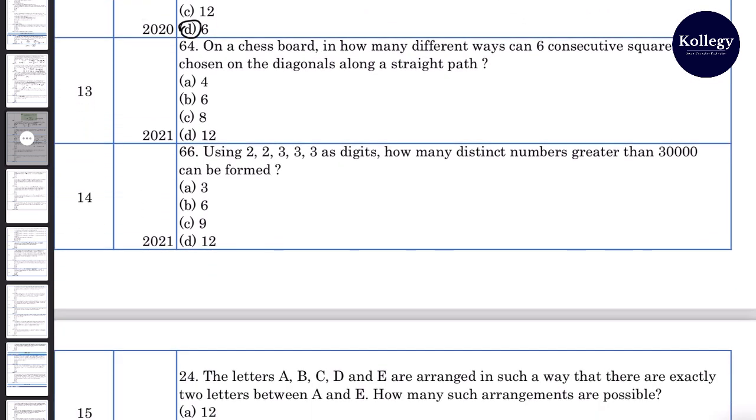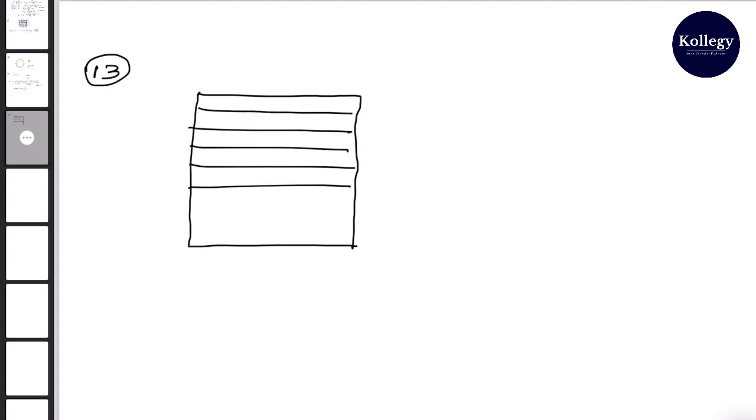13th question. On a chessboard in how many different ways can 6 consecutive squares be chosen on the diagonal along a straight path? Chessboard is 8 by 8 squares, so first we make a chessboard. 1, 2, 3, 4, 5, 6, 7 and 8. 1, 2, 3, 4, 5, 6, 7, 8.